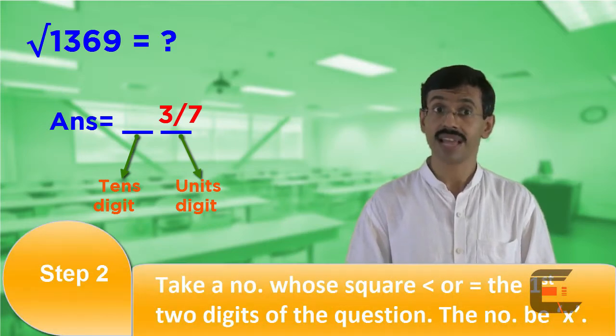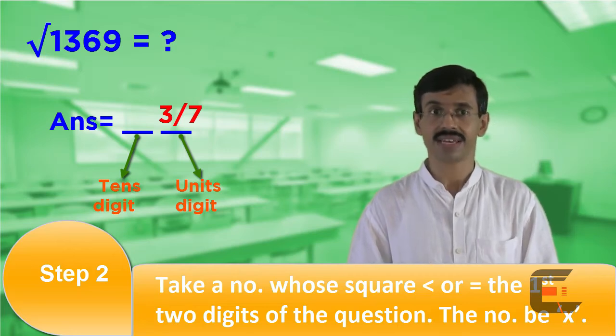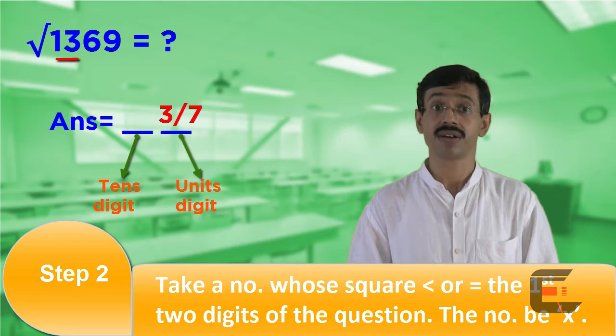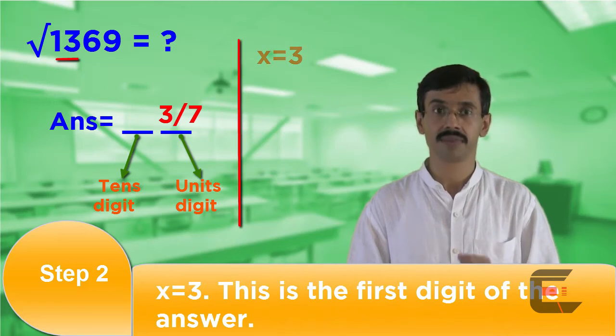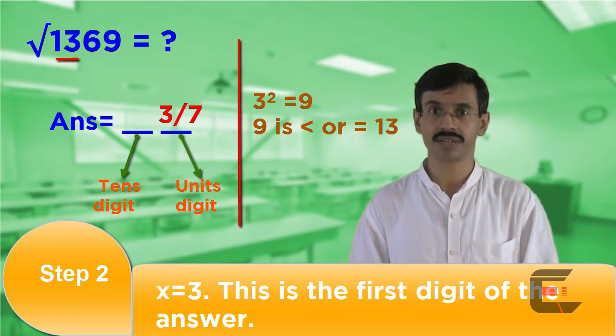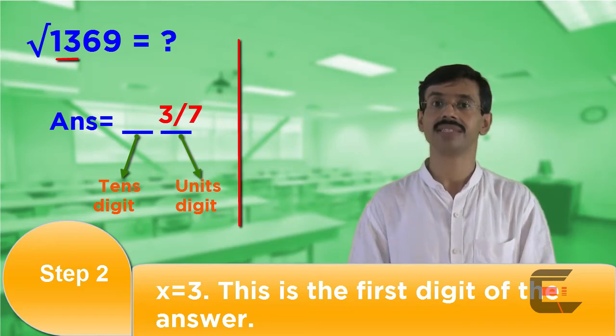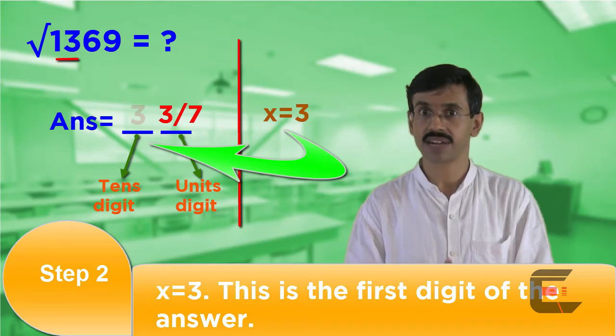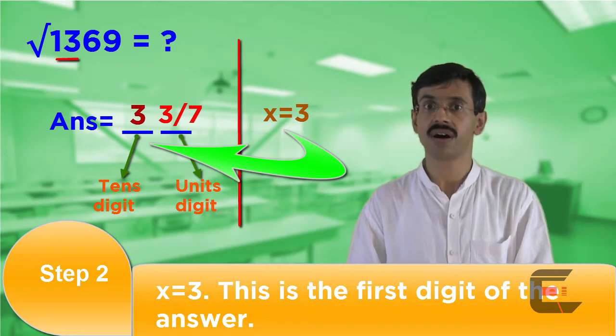Step 2. Take a number whose square is less than or equal to the first two digits of the question. Let that number be x. In our case, the first two digits of the question are 13. Therefore, our x has to be 3 because 3² = 9, which is less than but nearest to 13. If we take 4, 4² will be equal to 16, so 16 is more than 13, hence not correct.